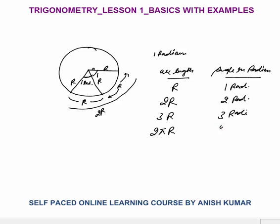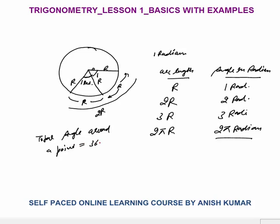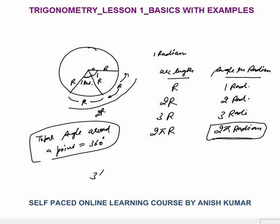We know that the total arc length of a circle is 2πR. So the total angle in radians would be 2π radians. Very important: the total angle made by the entire circumference at the center is 2π radians. And we know the total angle around a point is 360 degrees, so 360° always equals 2π radians.